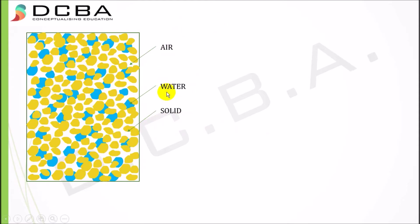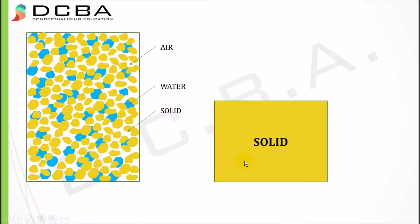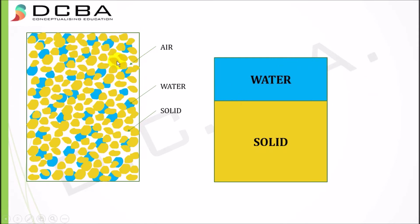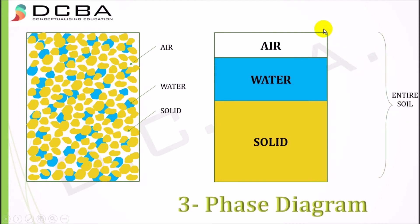I differentiate all three elements — solid, water, and air — into separate sections in a diagram. All the solids are packed together at the bottom, all the water molecules are kept above the solids, and all the air voids are placed above the water. This diagram, where the individual elements of solid, water, and air are separated, is called the three-phase diagram. The gaps between solid particles are called voids, and air plus water together form the voids in the soil.